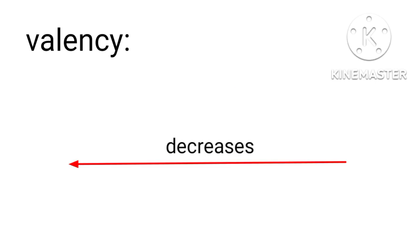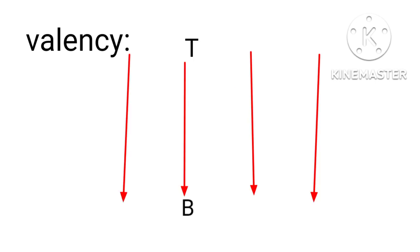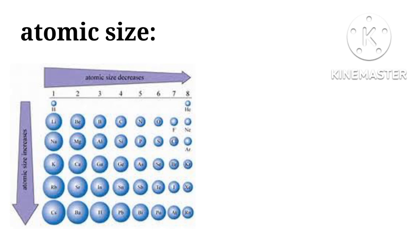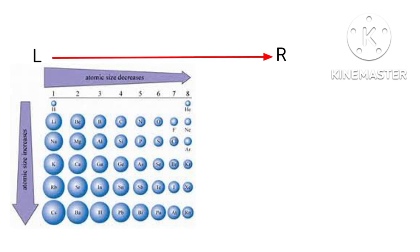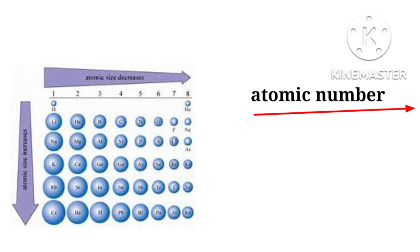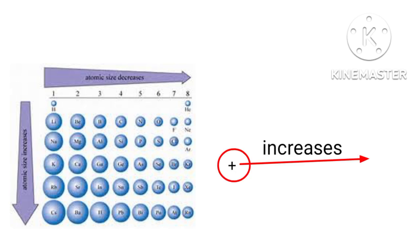We now take up atomic size. Moving from left to right in the periodic table, atomic number increases, means positive charge of nucleus also increases.